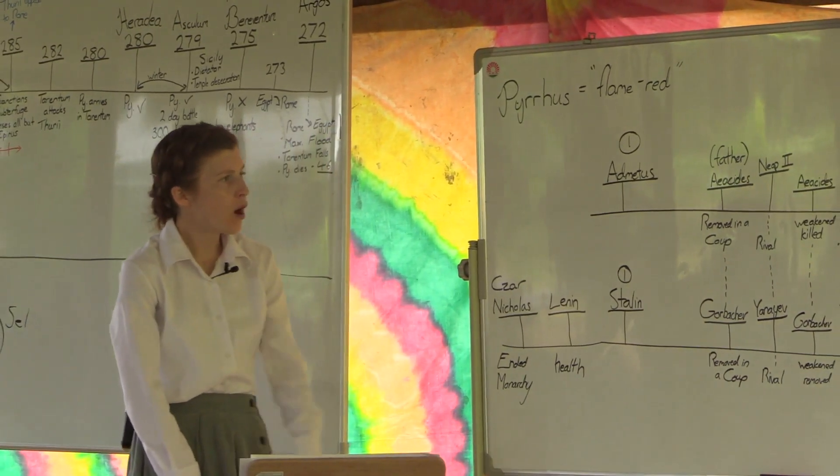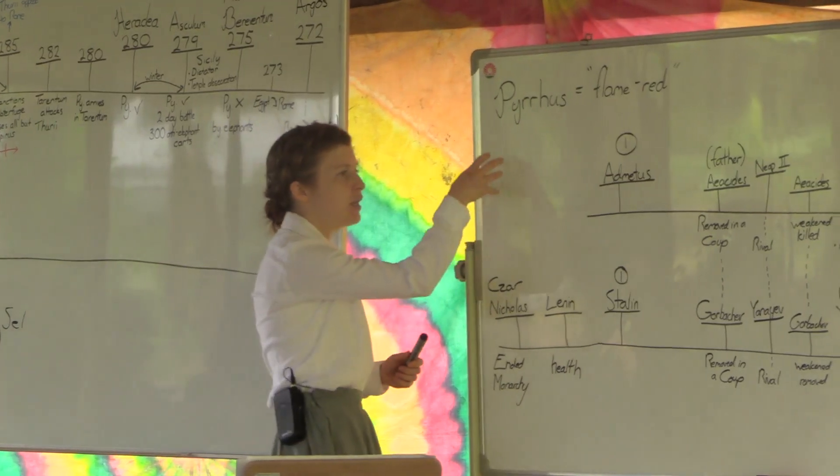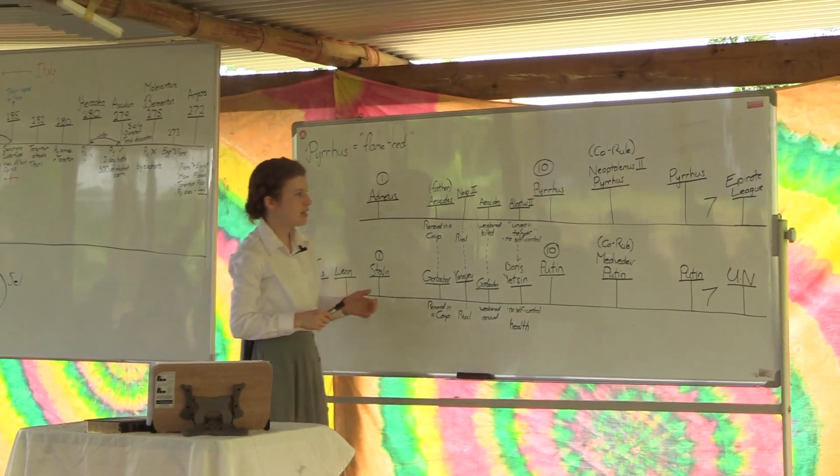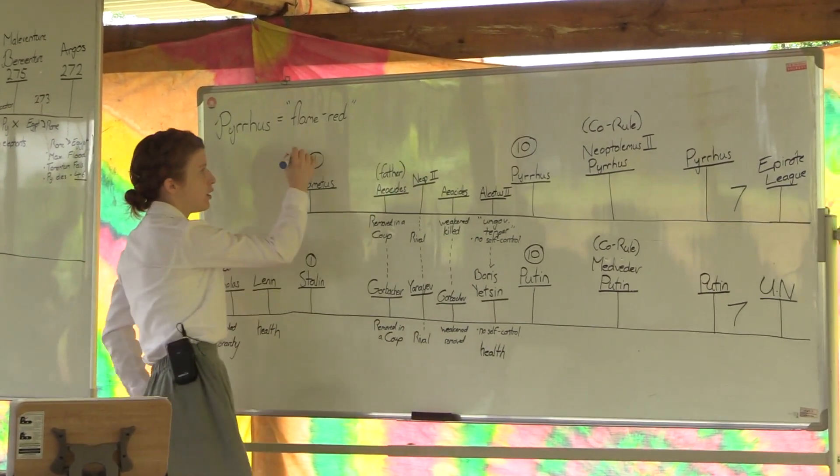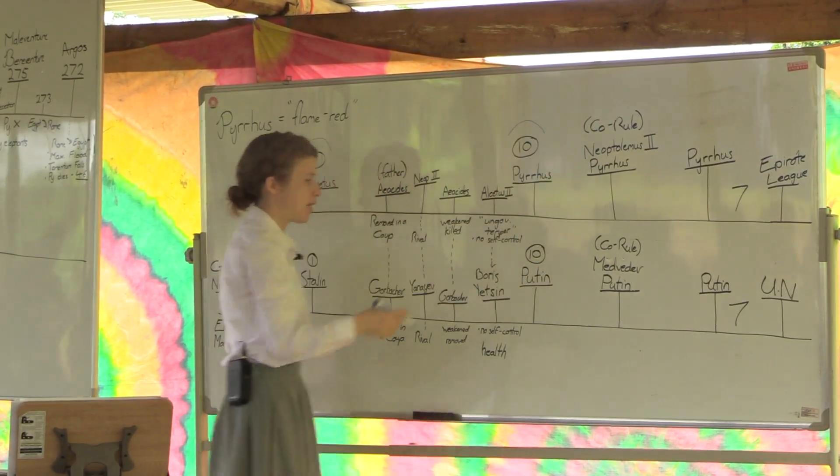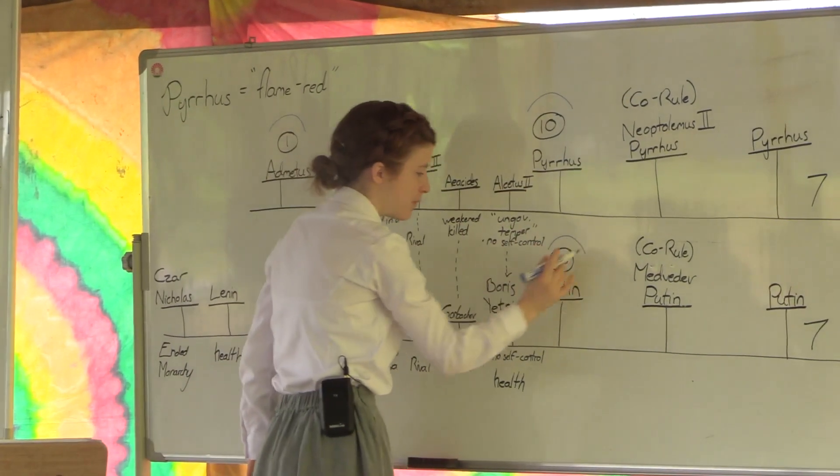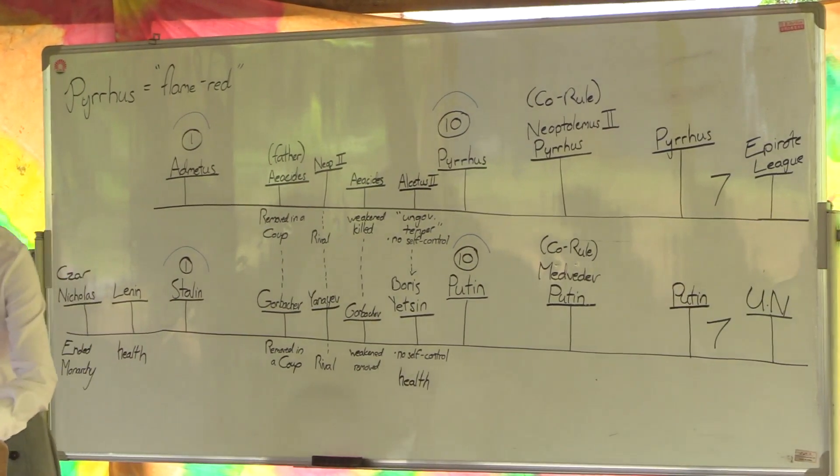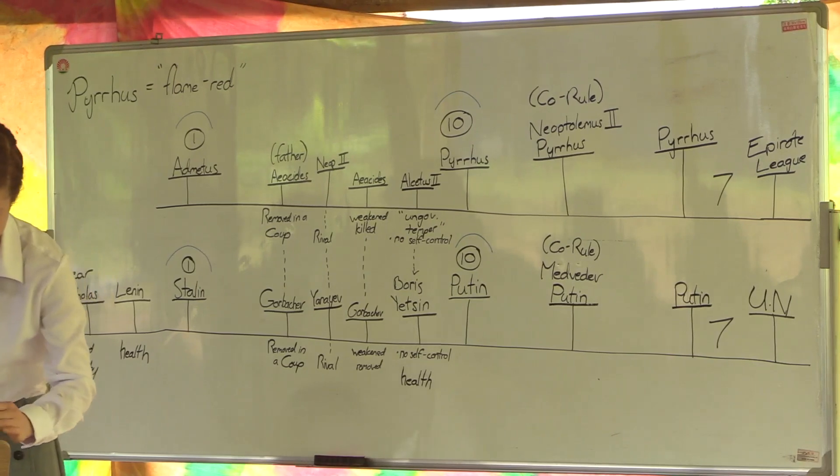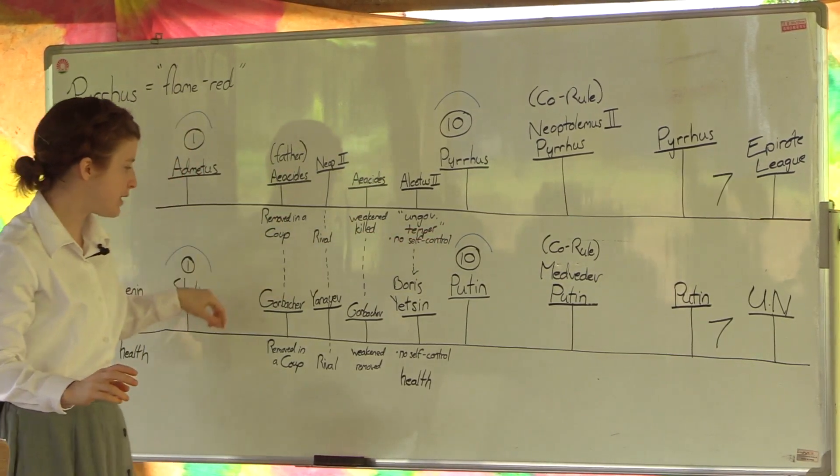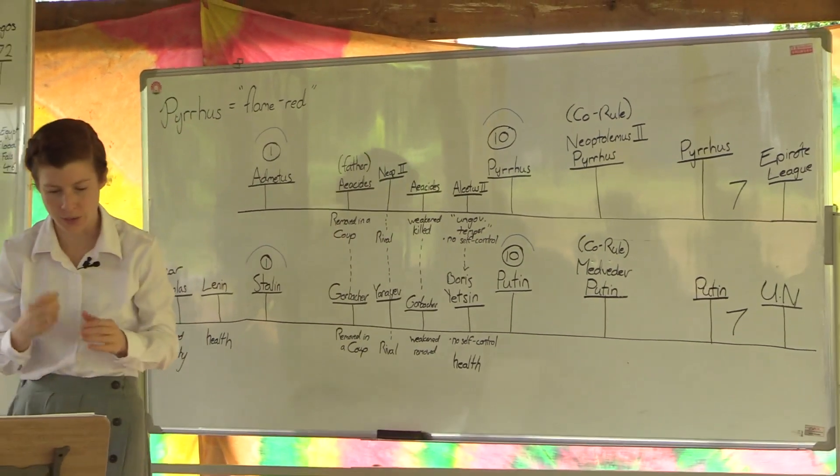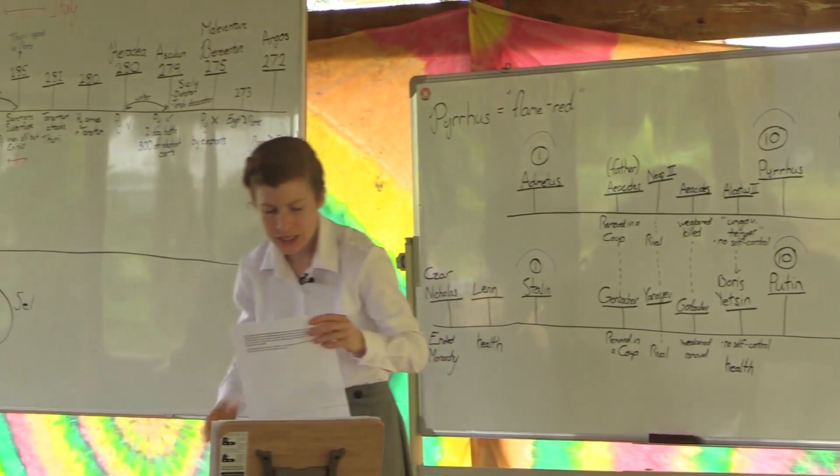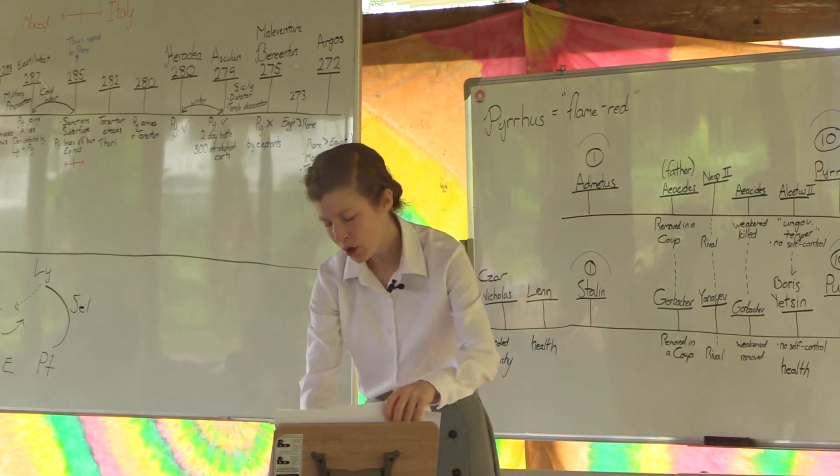So what we learn from tracing this history of Epirus which is a type of the king of the south and Russia which is the king of the south is we see that Admetus represents Pyrrhus end from beginning. The same way Pyrrhus represents Vladimir Putin, Vladimir Putin, Stalin. So who else can Pyrrhus represent? Stalin. If A equals B and B equals C then A equals C. Pyrrhus and Stalin can also be types of each other.